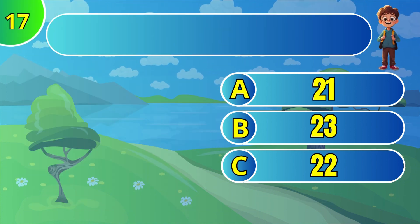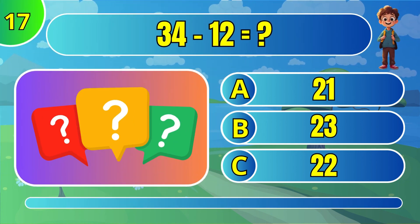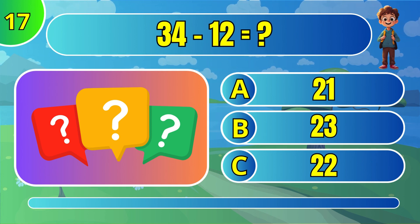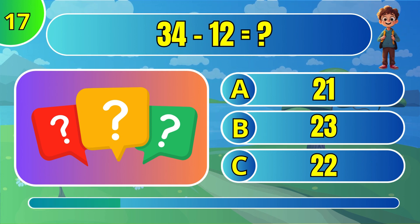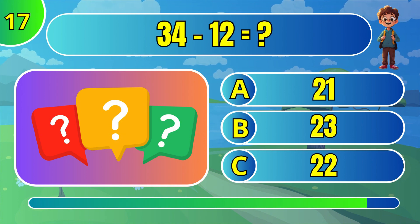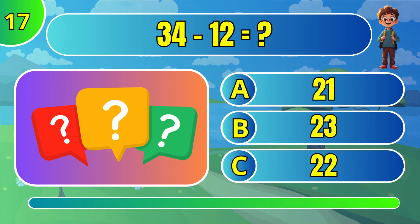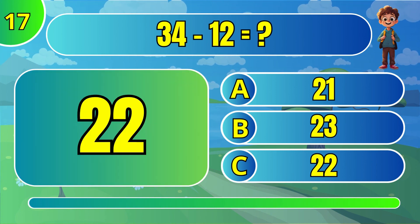What is 30 plus 4 minus 12? The answer is C: 22.